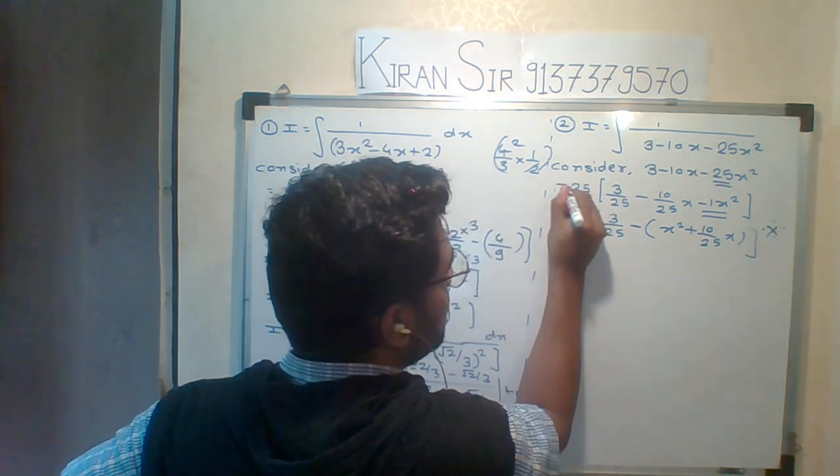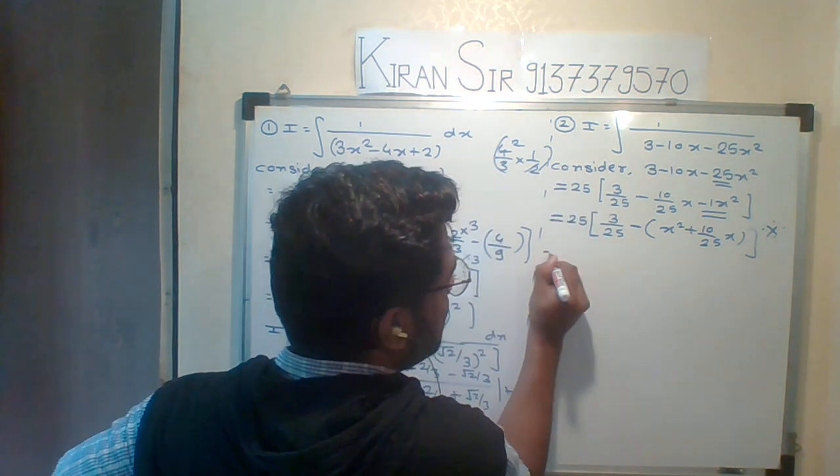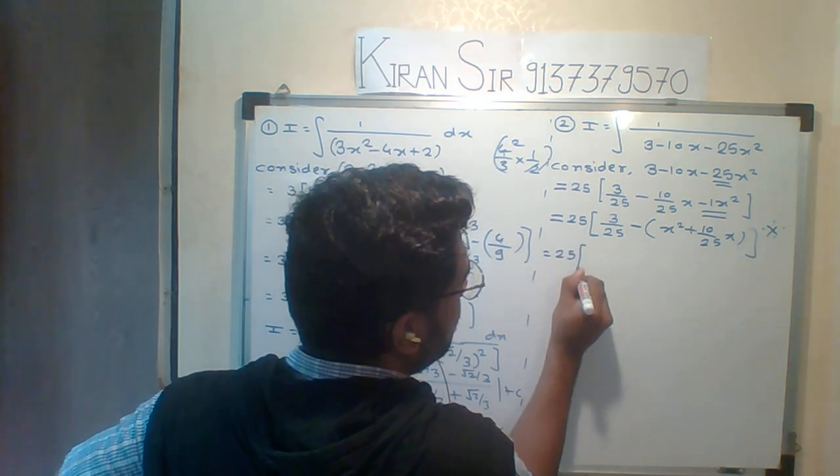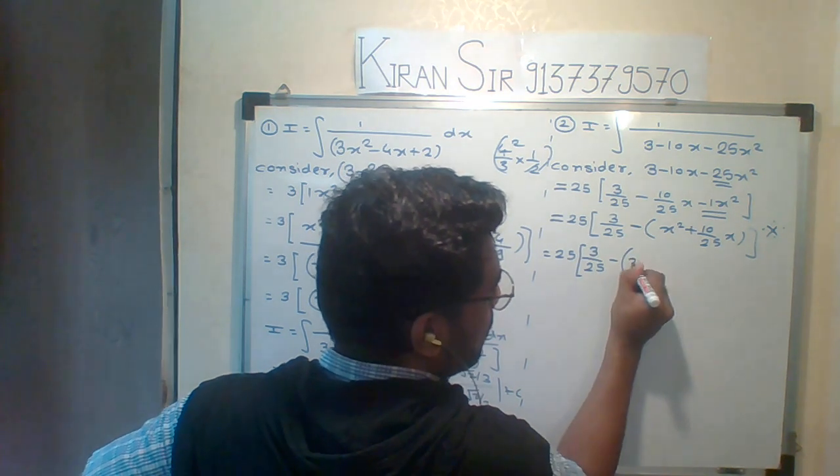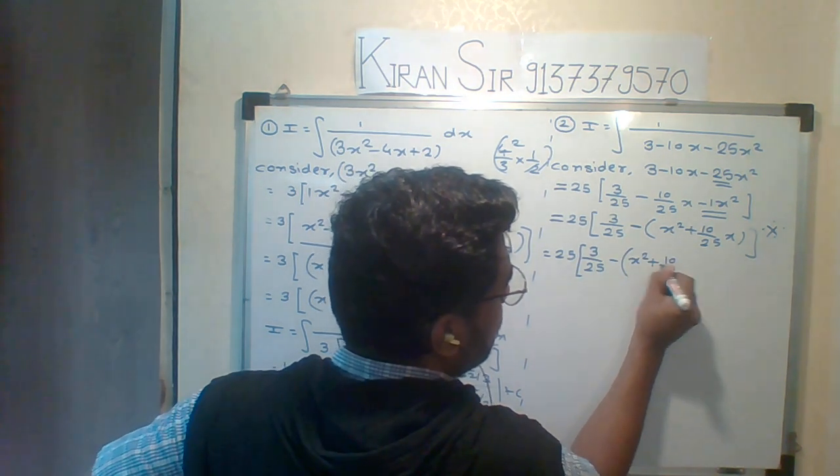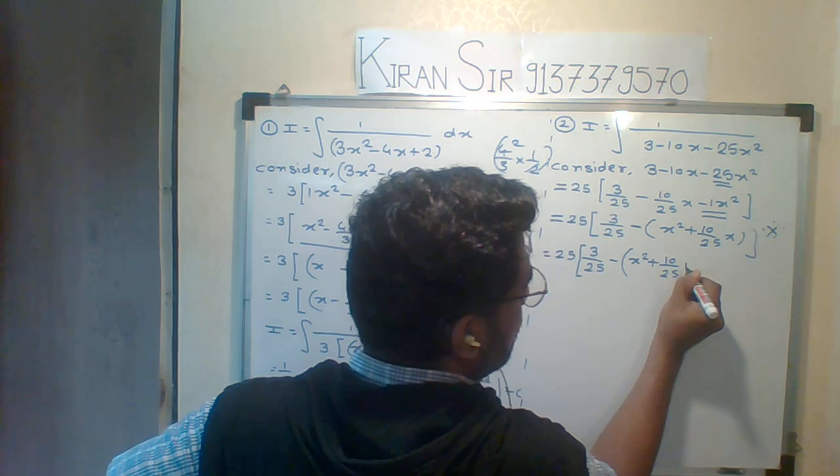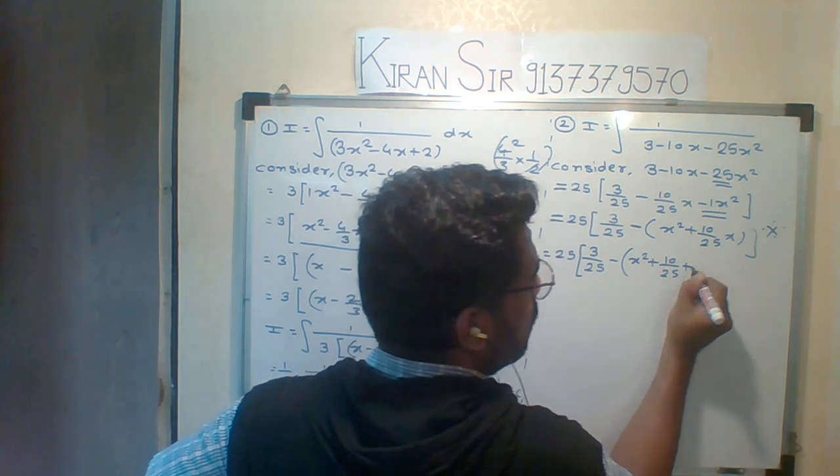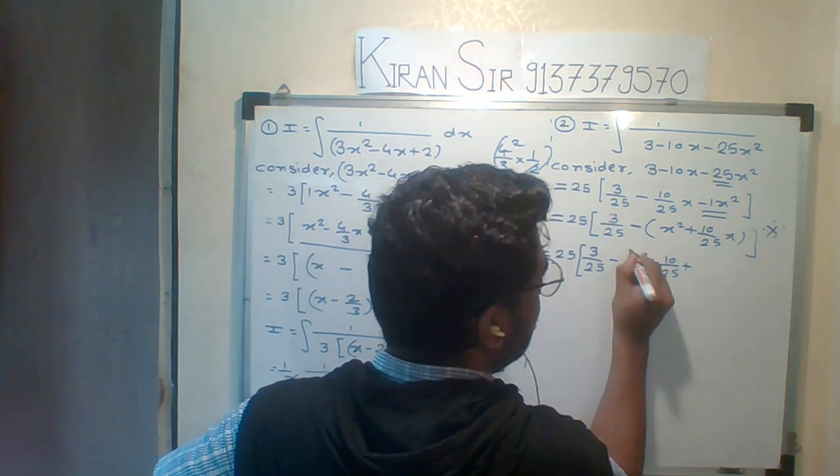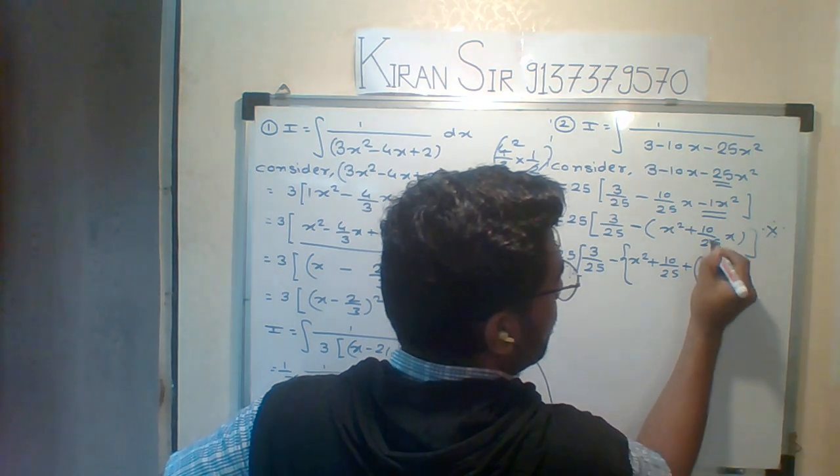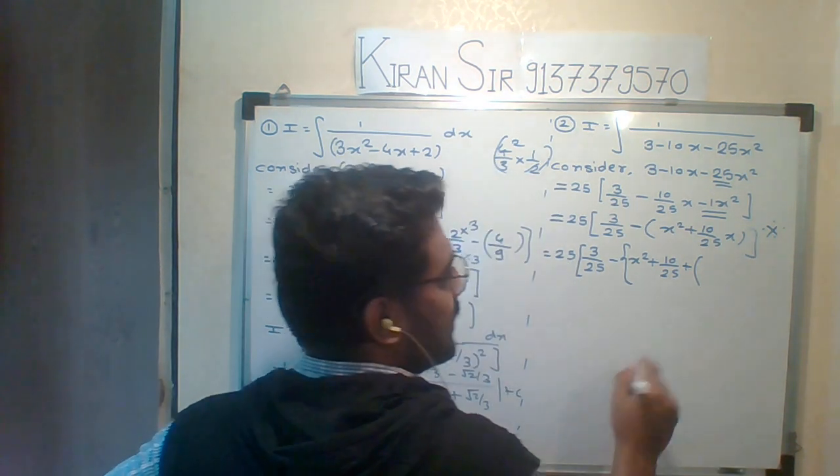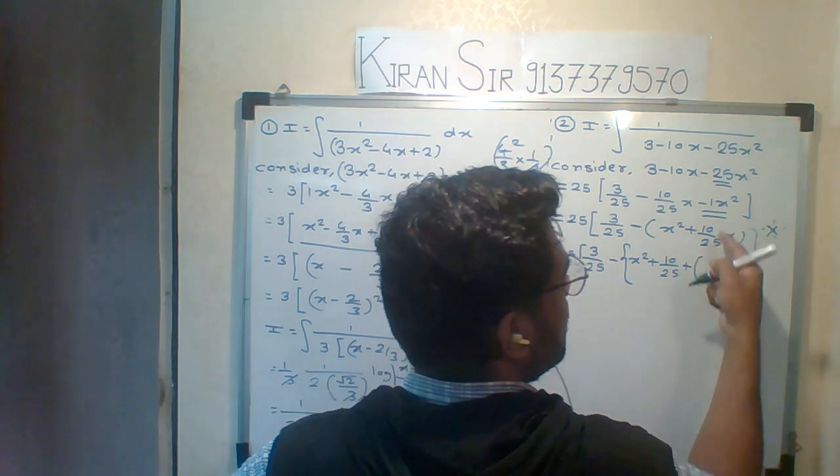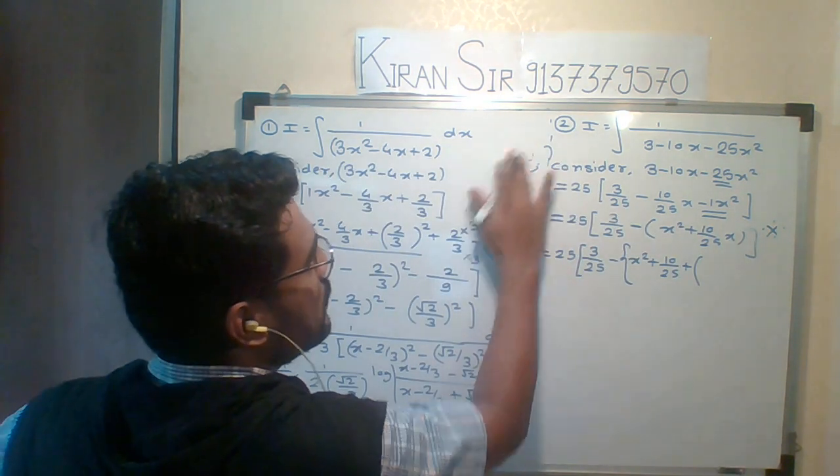What do I do now? That you know. Look at all. Now I am going to add. What I am going to add? Half of the coefficient, square of the half of the coefficient of x. The coefficient of x is how much? Here, 10 upon 25.